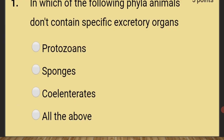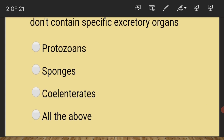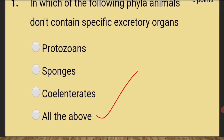In which of the following phyla do animals not contain specific excretory organs? The answer is all the above — that is protozoans, sponges, and coelenterates.